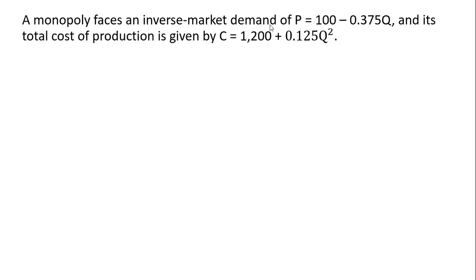A monopoly faces an inverse market demand of P equals 100 minus 0.375Q, and its total cost of production is given by C equals 1,200 plus 0.125Q squared.